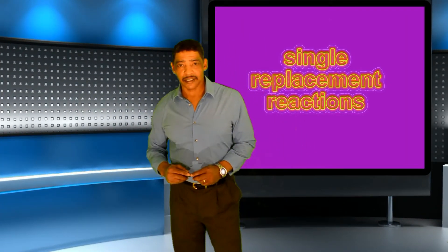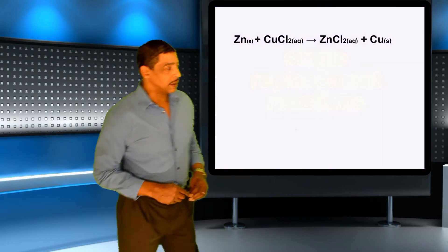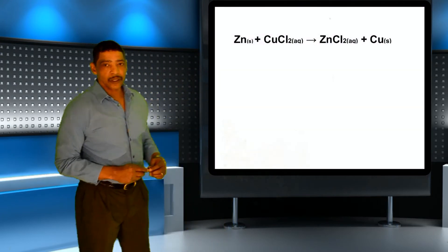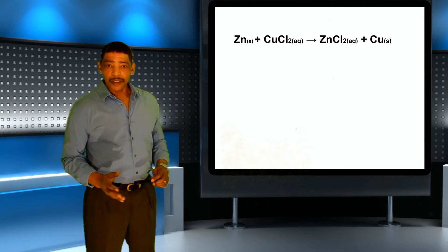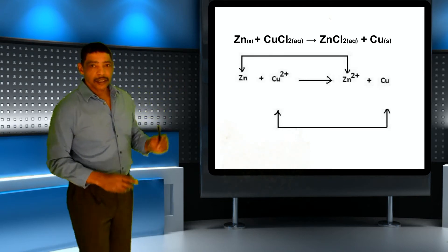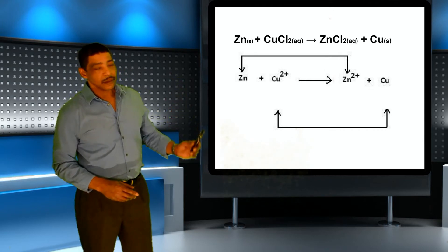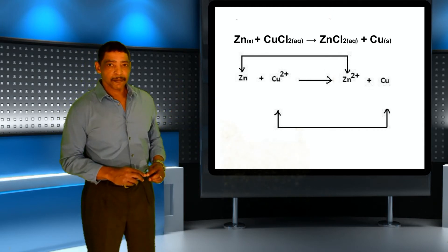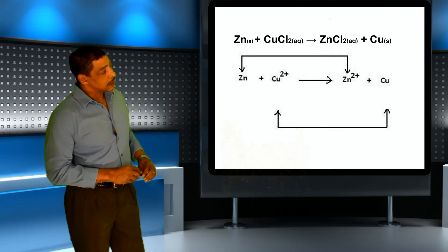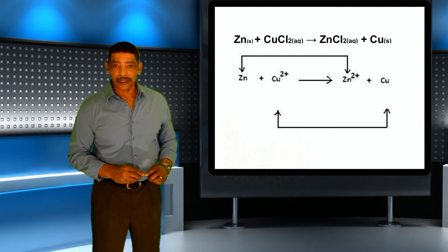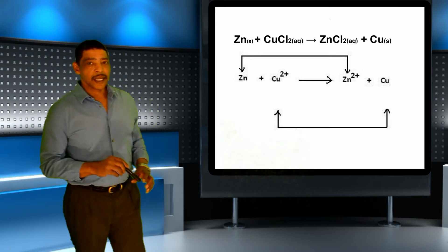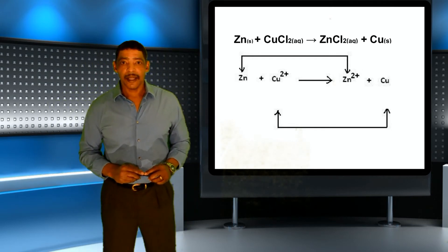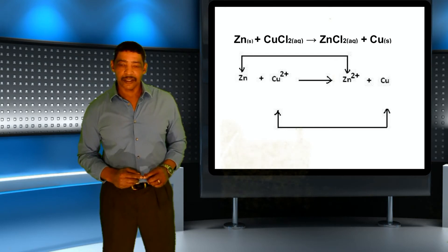Single replacement reactions represent another type of oxidation-reduction reaction. Consider the reaction between zinc metal and aqueous copper chloride to produce aqueous zinc chloride and copper metal. During this reaction, the oxidation number of zinc will increase from zero to plus two. Simultaneously, the oxidation number of copper two cation will decrease from plus two to zero. In this reaction, zinc has undergone oxidation and copper two cation has undergone reduction.